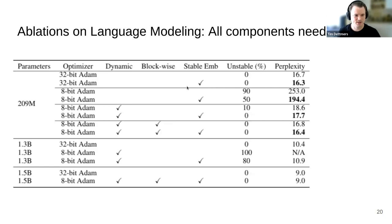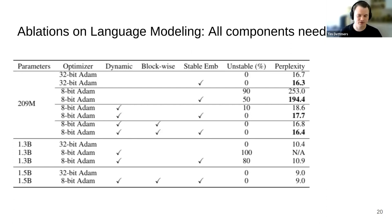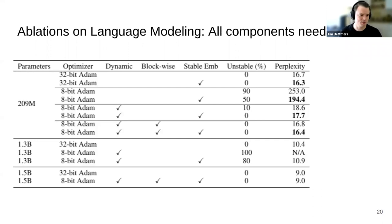8-bit optimizers work. If we ablate the components, we find that we need everything introduced — the dynamic exponent data type, blockwise quantization, and stable embedding layers. With that, we can have 8-bit optimizer states that make fine-tuning much more accessible. 8-bit optimizers are widely used for people with a single GPU, particularly for fine-tuning things like stable diffusion.